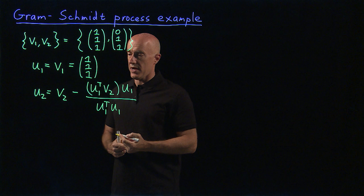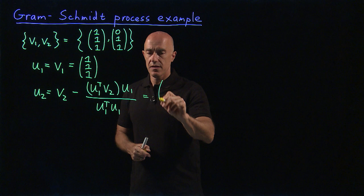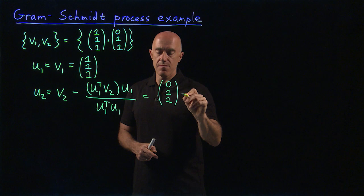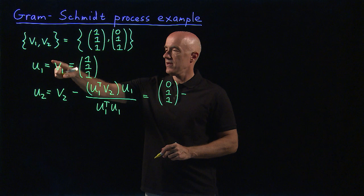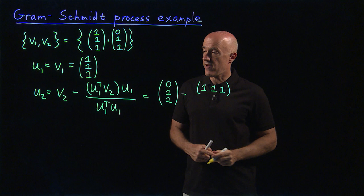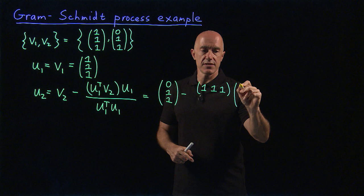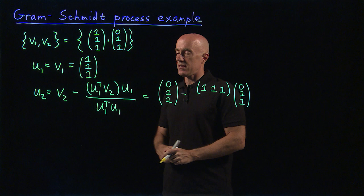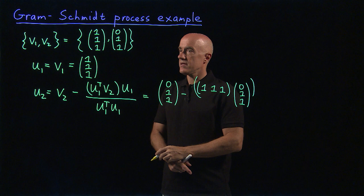What is this vector? This vector is V2, so it's our (0,1,1) vector. And from there we're subtracting off the piece that is along U1. So U1 transpose V2, I can write that down. U1 transpose is (1,1,1) as a row vector times V2, which is (0,1,1), a column vector. So that's a scalar. U1 transpose V2 is just a number.